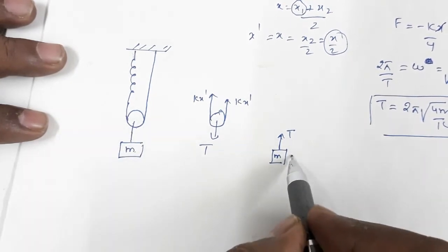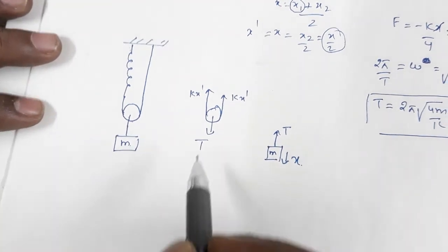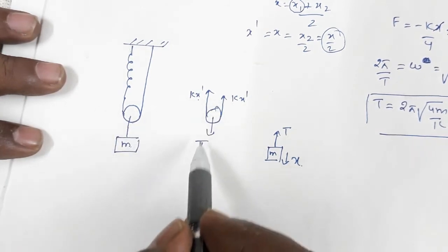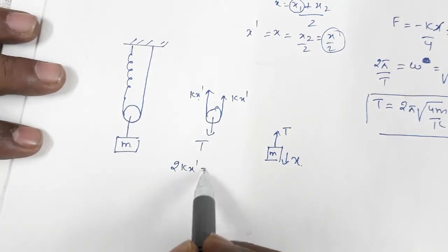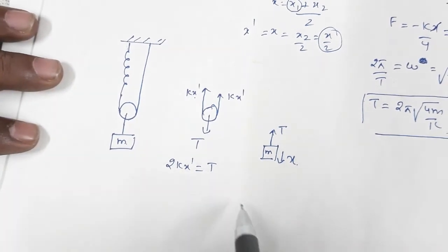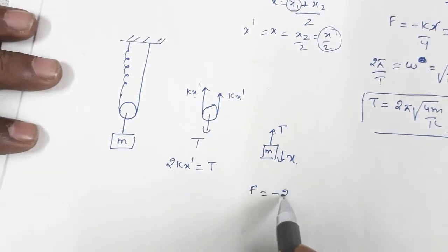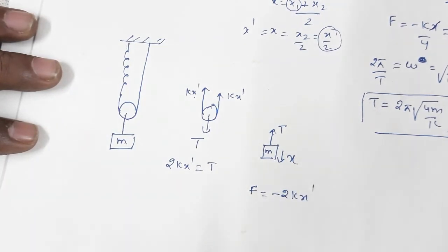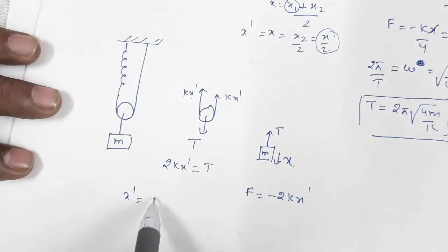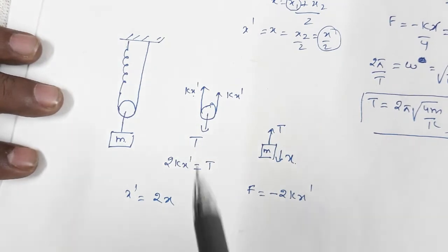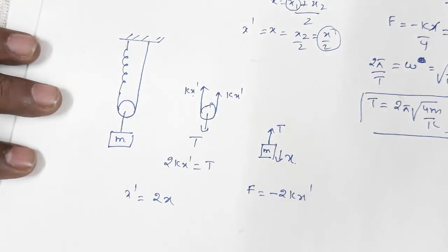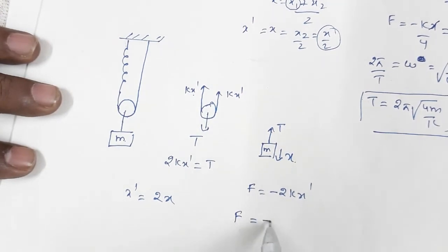The tension T acts upward on the block, which moves through distance x. The total upward force on the pulley is 2kx', and that equals T. So the restoring force on the block is F = −2kx'. Now, using the average displacement trick, x' = average of the two string-end displacements. One side is fixed (zero), so x' = x/2, meaning x' equals twice x — wait, rearranging: x' = x/2, so x = 2x'... Actually x' = 2x, since the block moves x and the spring side moves x' = 2x.